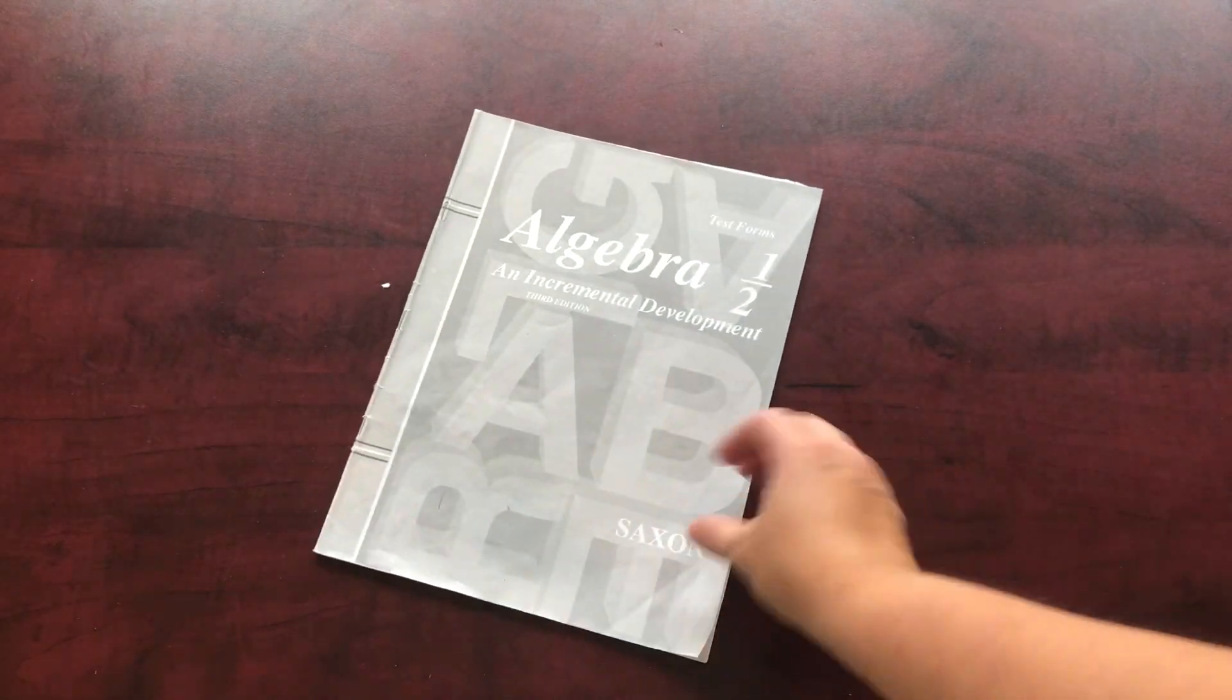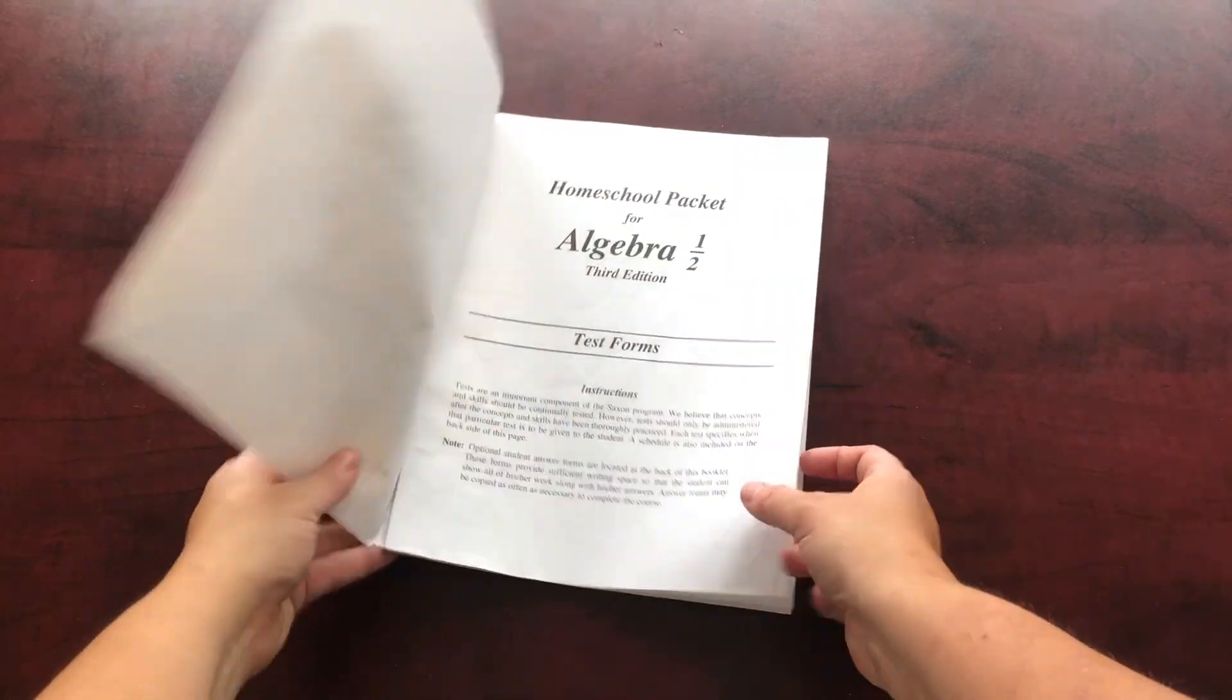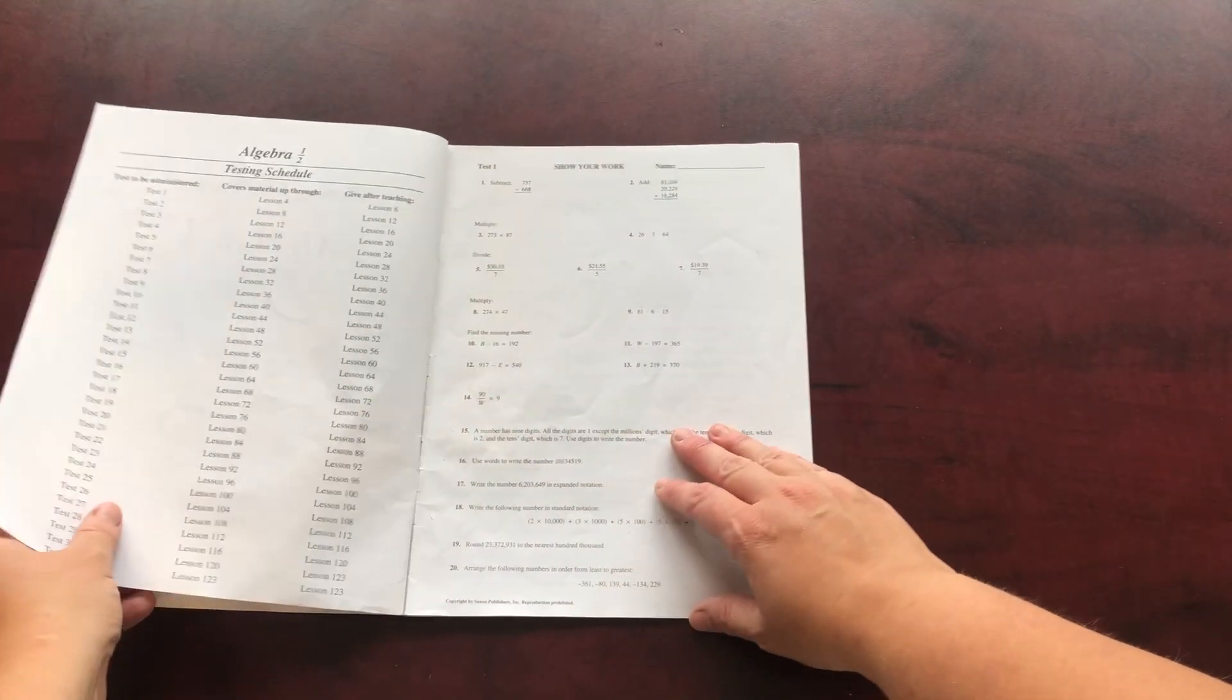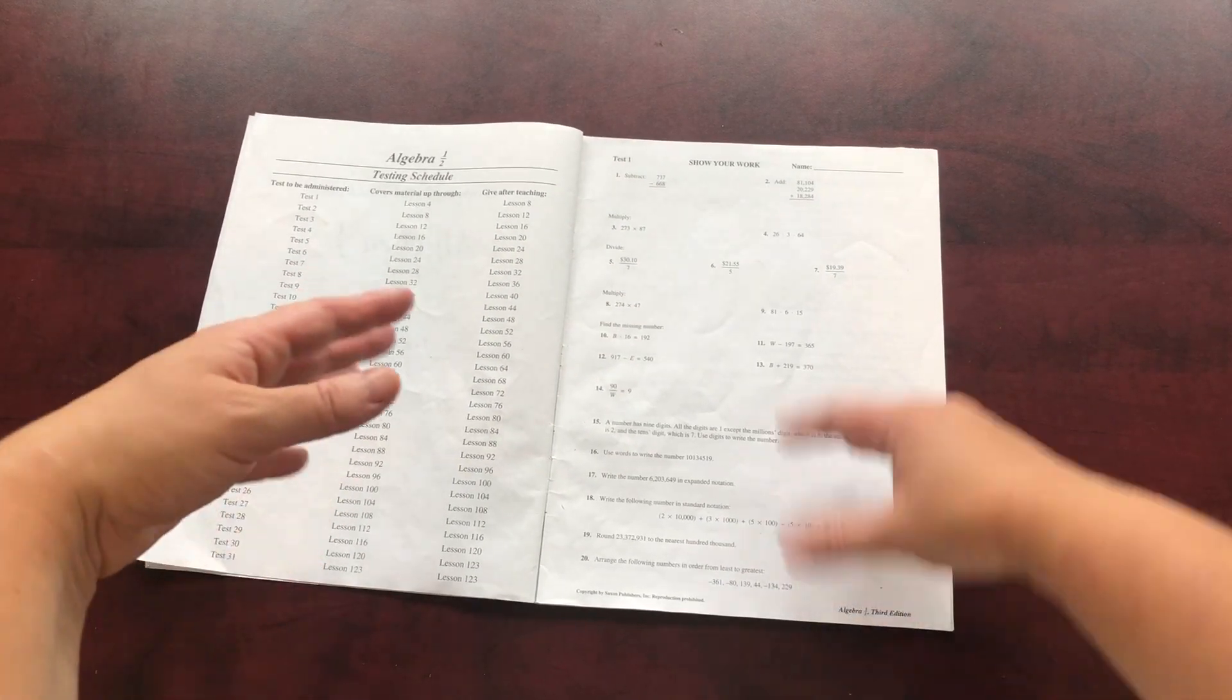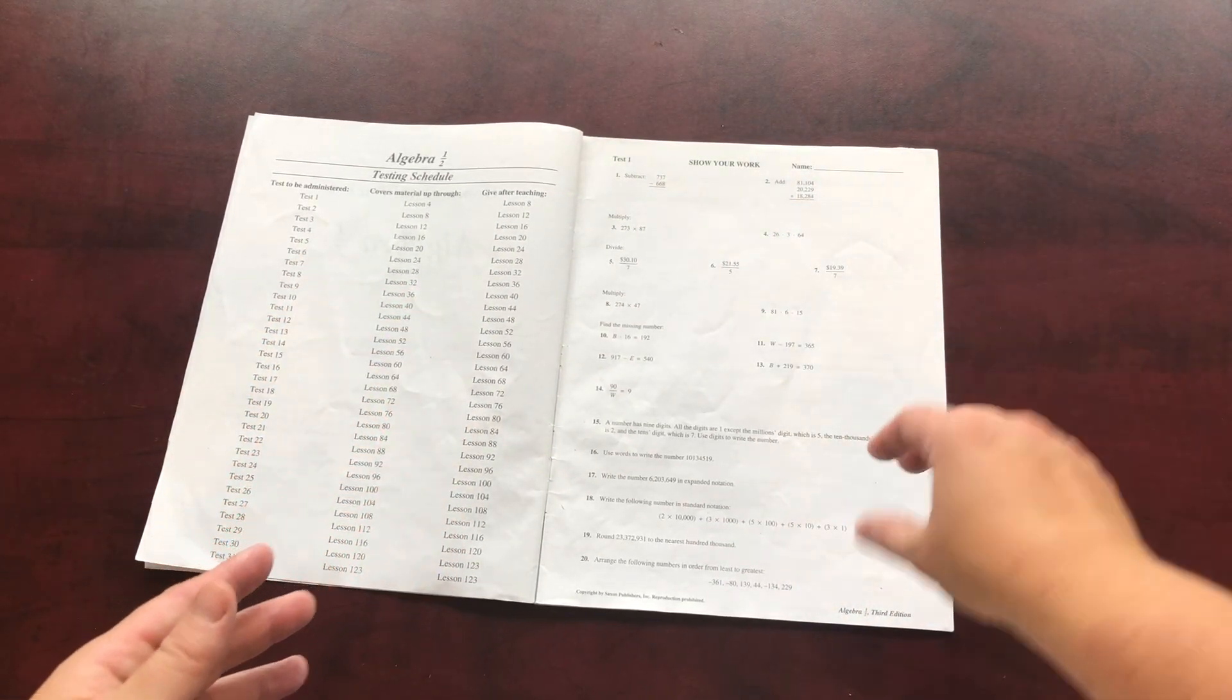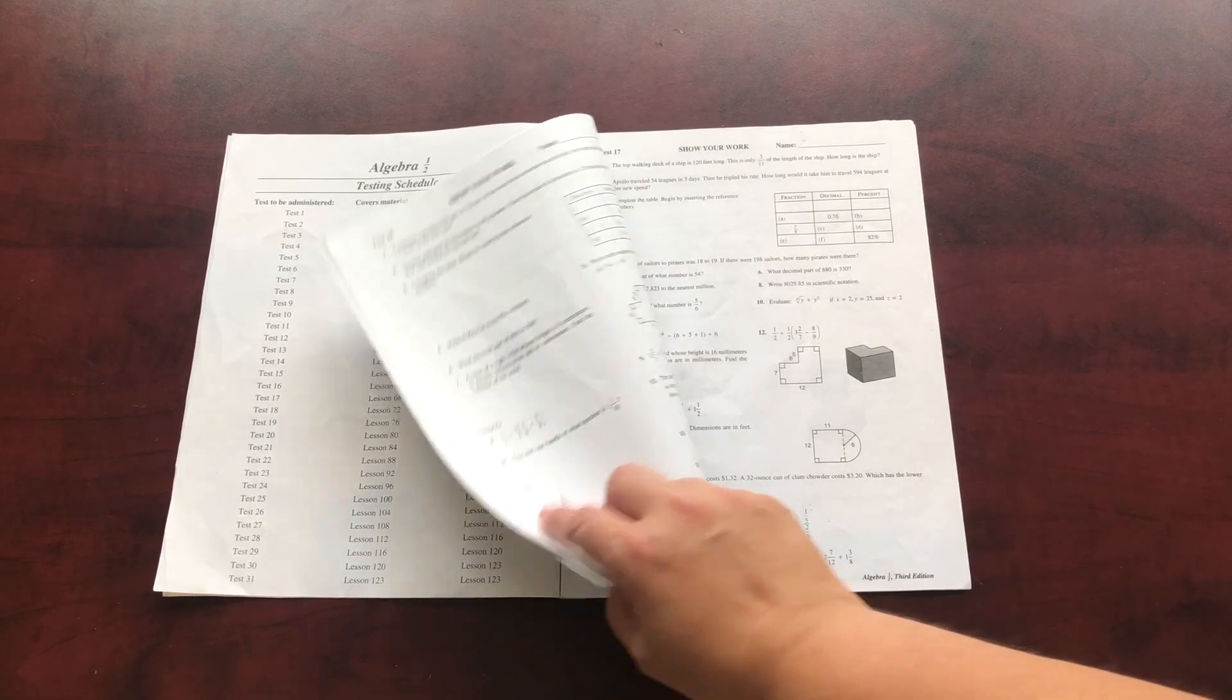And then the other part was this one, the test forms. So it's a very thin, basic one. I just have my children look at the test and just write down on a separate piece of paper. That way multiple children can use the tests.